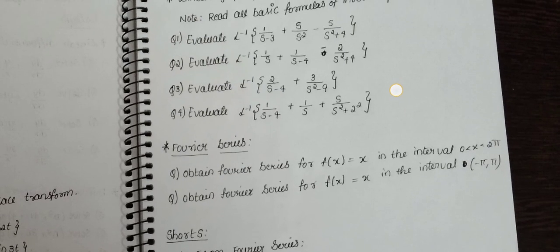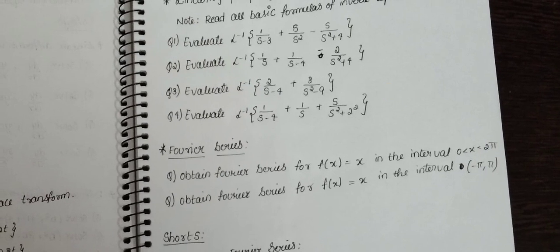Fourier series: you should prepare 2 short answers. Perfect preparation means: obtain the Fourier series for f(x) = x in the interval 0 to 2π, and obtain the Fourier series for f(x) = x in the interval −π to π. These are the key questions. The interval 0 to 2π or −π to π is straightforward once you know the formula.